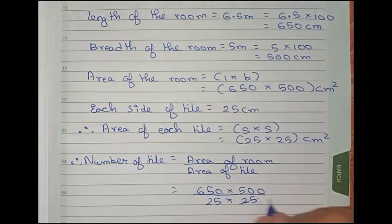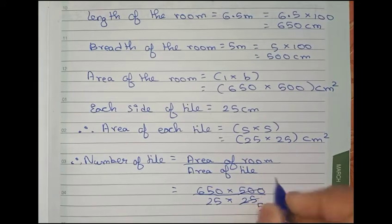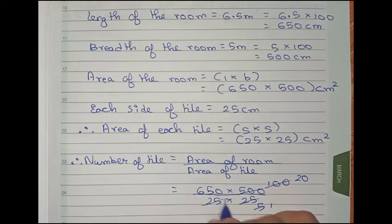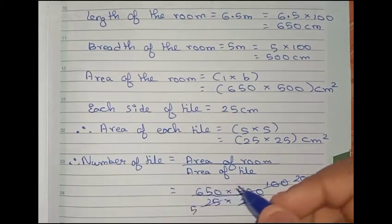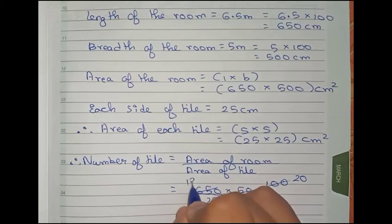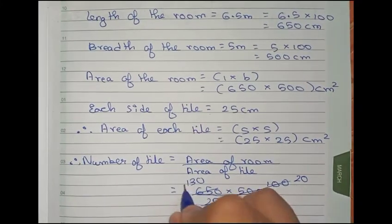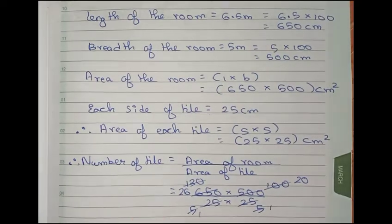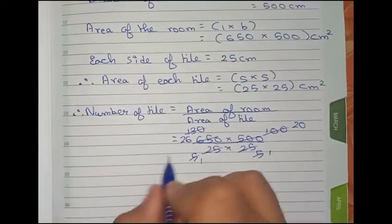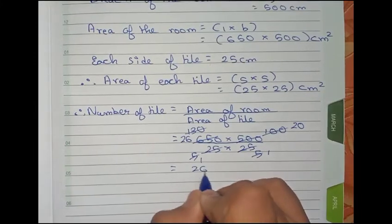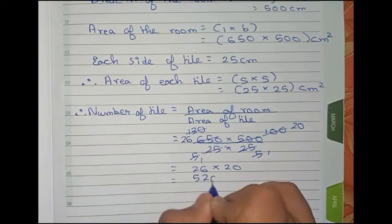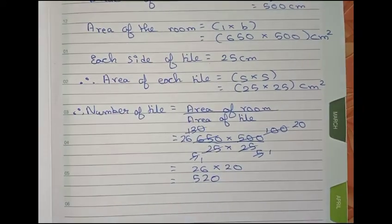First cut by 5, now again by 5. Now this side will become 130. Now again cut by 5—it will become 26. So now it becomes 26 into 20. That is equal to 520 tiles. The number of tiles is 520.